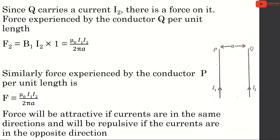Since Q carries a current I2, there is a force on it. The force experienced by conductor Q per unit length, F2, is equal to B1 times I2, which equals mu0 I1 I2 divided by 2 pi A. Similarly, the force experienced by conductor P per unit length is F equal to mu0 I1 I2 divided by 2 pi A.